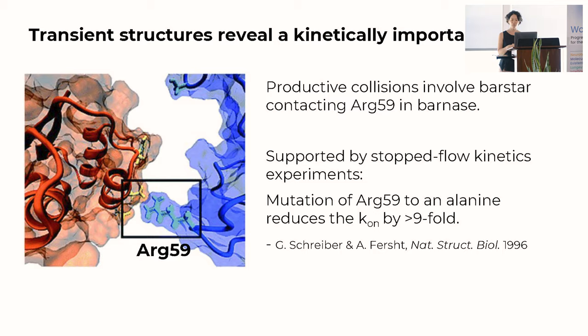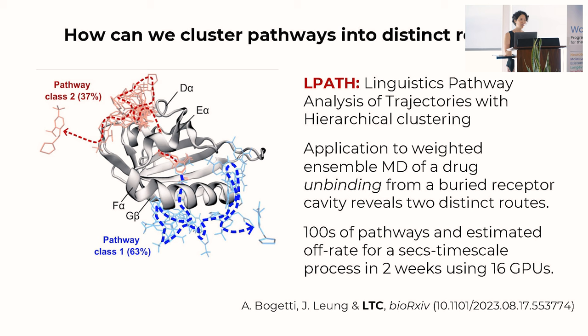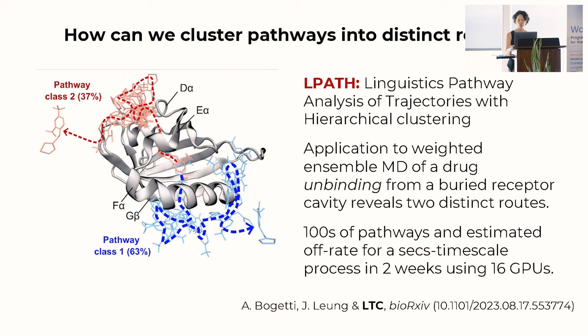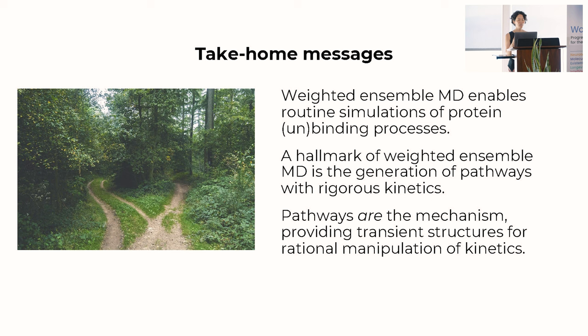Comparing pathways of variable lengths is non-trivial, so we developed a method called LPATH, which uses linguistics techniques used for detecting plagiarism. We applied it to a weighted ensemble simulation of a drug unbinding from a buried cavity in a receptor. We identified two different pathway classes with their appropriate probabilities from hundreds of pathways, and estimated an off-rate for a second-timescale process in two weeks using 16 GPUs. This demonstrates that using the weighted ensemble technique enables routine simulations of protein binding and unbinding processes.